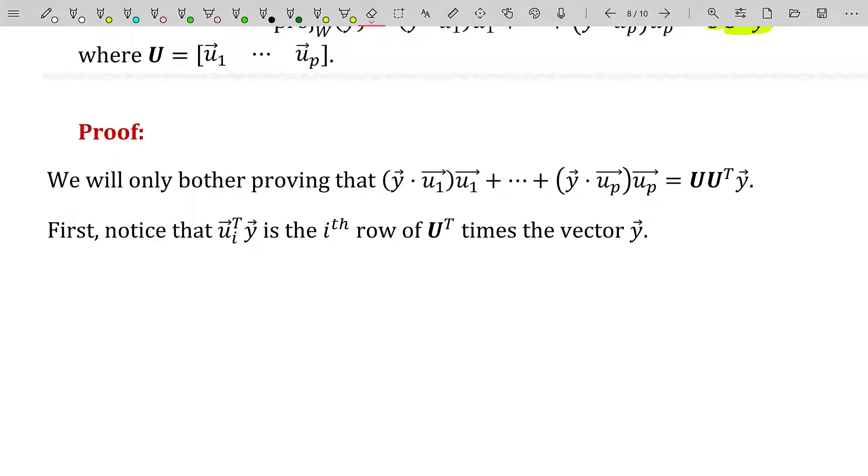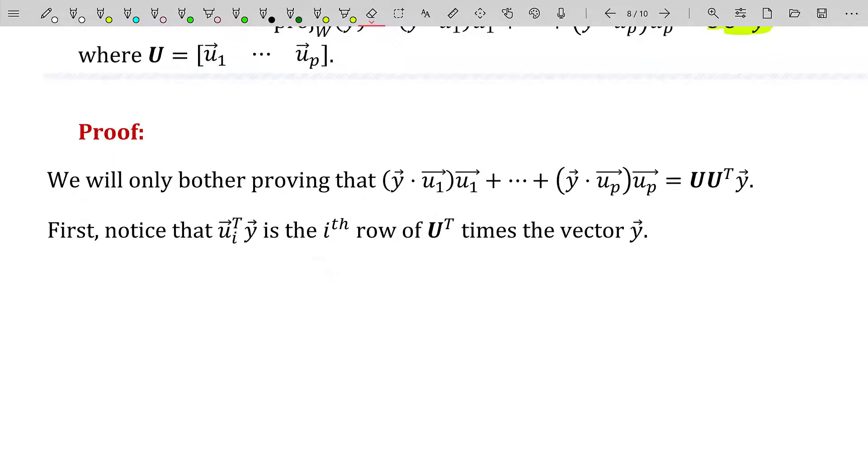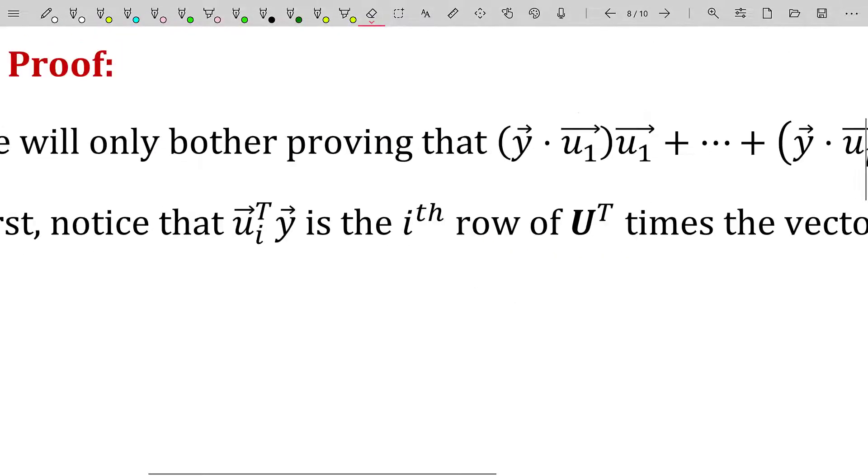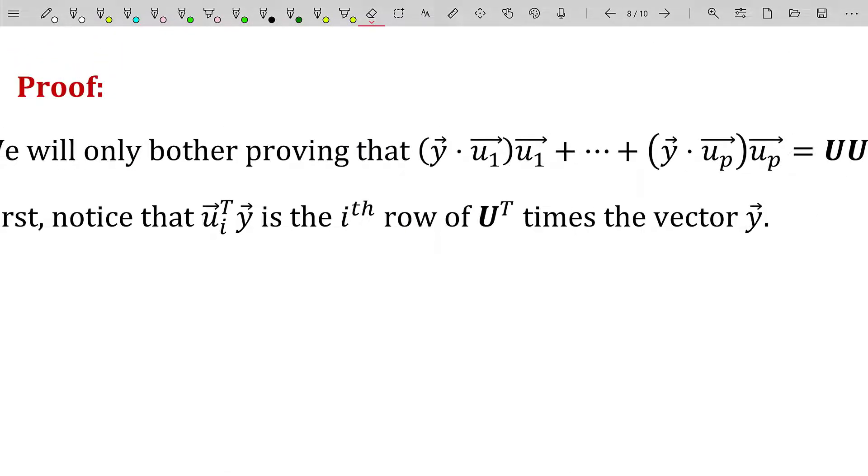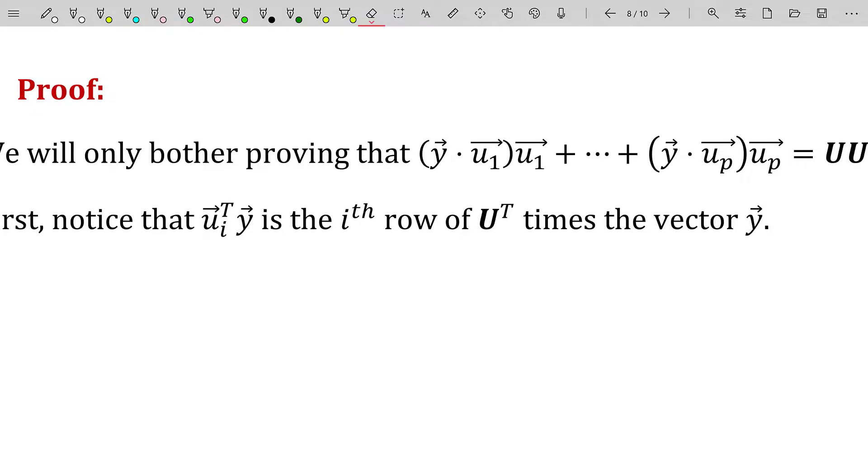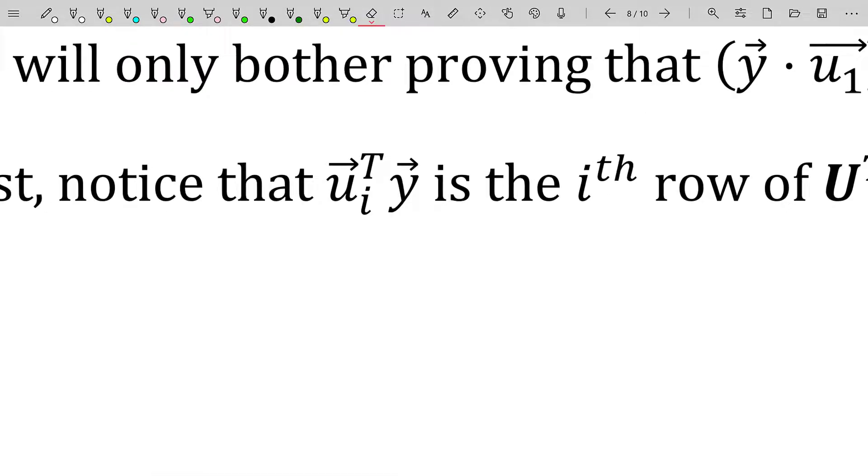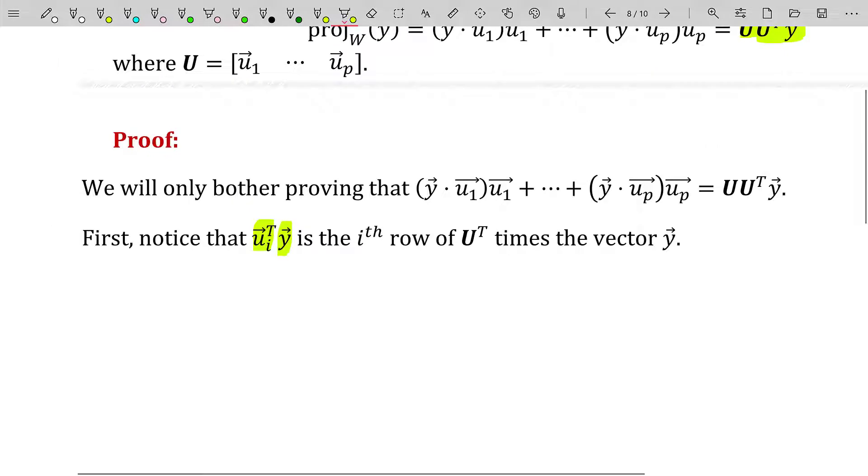Since we've already shown that the orthonormal basis begets this left-hand side right here for the projection of y onto the subspace W, we're only going to prove that that linear combination is equal to U times U transpose times y. So let's see. First, we're going to notice that u sub i transpose, that is the row vector now times y, is the i-th row of U transpose times the vector y. That should make sense.